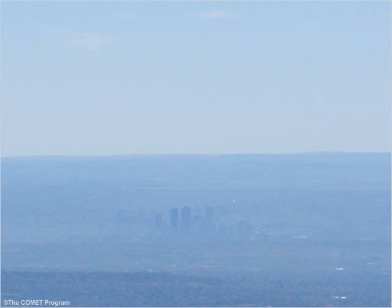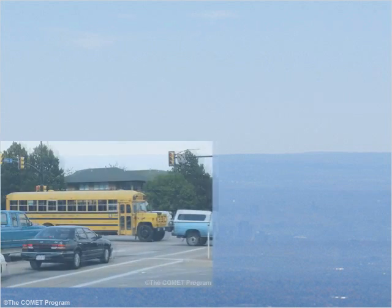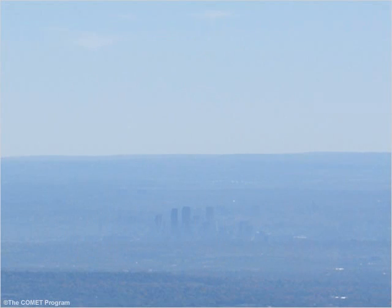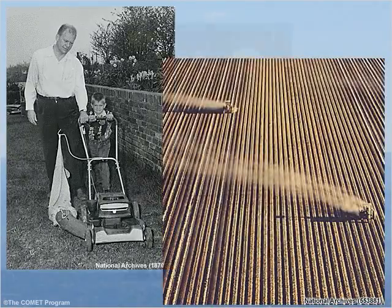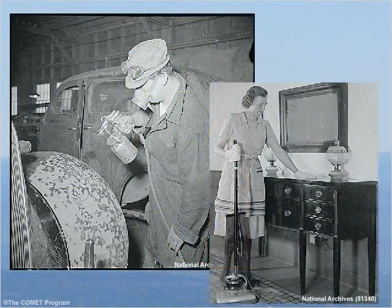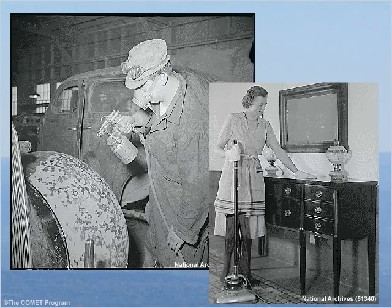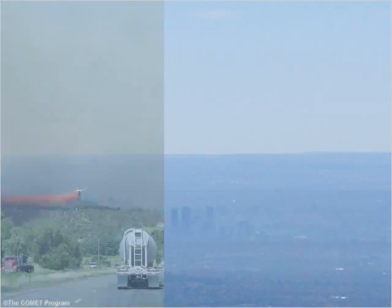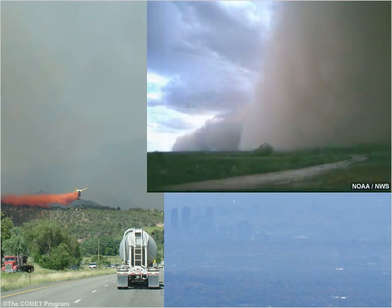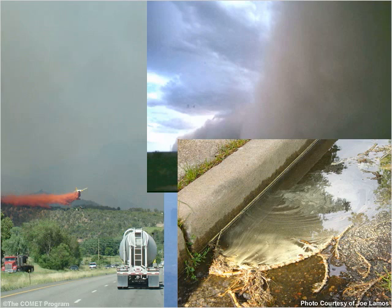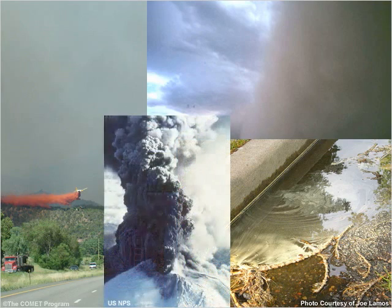Air pollution is generated by many human activities. Those include the obvious, like driving cars, trucks, and buses, and operating power plants and factories, but also from less obvious sources like the use of lawnmowers, fertilizers, pesticides, paints, varnishes, and cleaning agents. Air pollutants are also generated naturally from smoke and ash from wildfires, sand and organic matter picked up by winds, pollen and other organic compounds from plants, and gases and ash from volcanic eruptions.